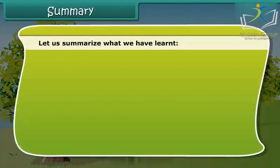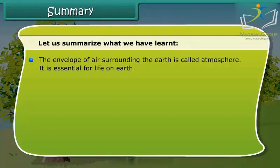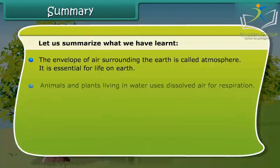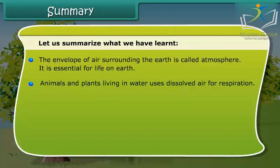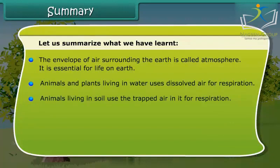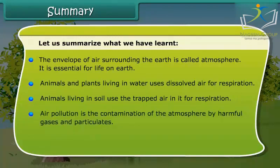Let us summarize what we have learned. The envelope of air surrounding the earth is called the atmosphere, and it is essential for life on earth. Animals and plants living in water use dissolved air for respiration. Animals living in soil use the trapped air in it for respiration. Air pollution is the contamination of the atmosphere by harmful gases and particulates.